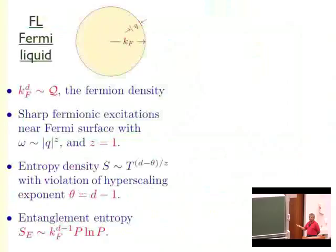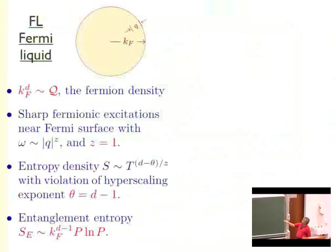Similarly, the entanglement entropy — for a 1+1D CFT, as we learned from Tadashi's lectures — goes as c/6 log L. Basically the same result holds here: the log L becomes log P where P is the perimeter of the entangling region, and you get an additional factor of P from summing over the different directions. In fact you can also figure out the coefficient that way.